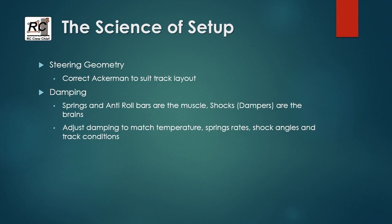Next is steering geometry. You need to try and optimize your steering Ackerman to suit the track layout. A tight twisty track is going to want more steering Ackerman, while an open sweeping flowing track will probably work better with less Ackerman.